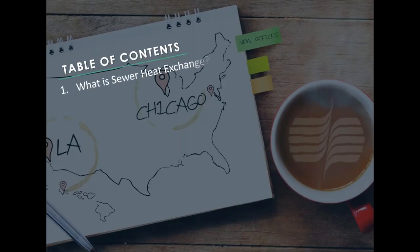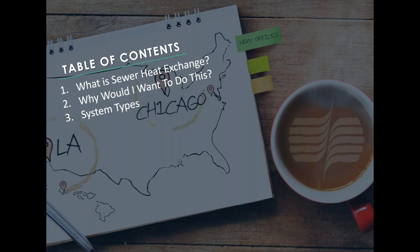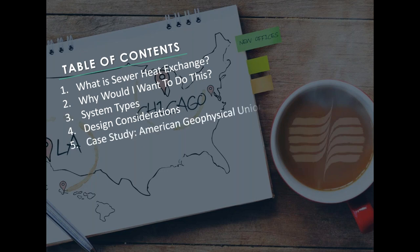We'll go through the table of contents. First, we'll start with what is sewer heat exchange. Next, the million dollar question of why would I want to do this. Third, we will discuss the system types. Fourth, we will discuss specific design considerations that both architects and engineers need to take into account. Fifth, we will touch on the case study for the American Geophysical Union. And finally, at the end, I will open it up to a question and answer session — hoping to have 10 or 15 minutes. You can use the GoToWebinar tool's questions section, and I will try to get through as many as I can.